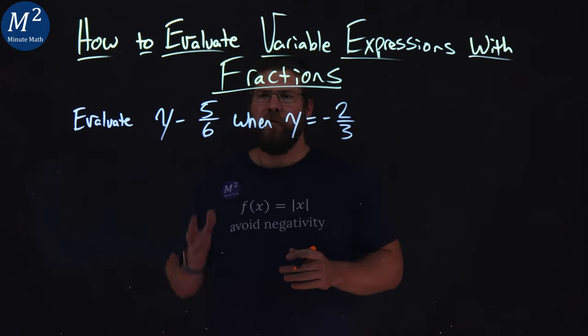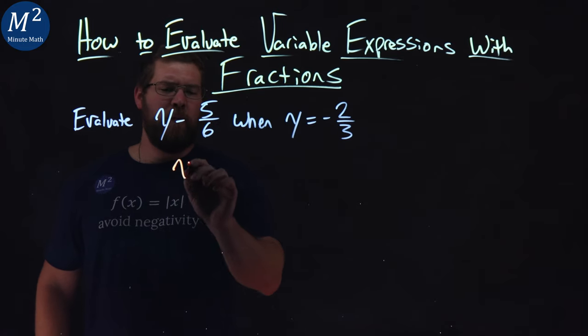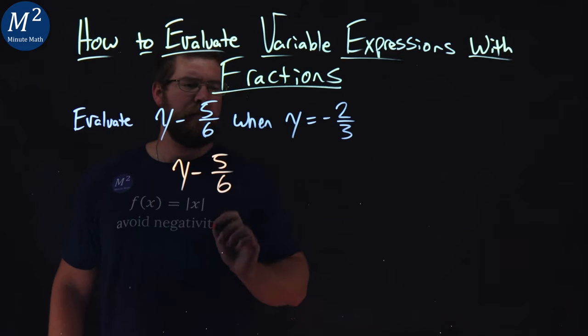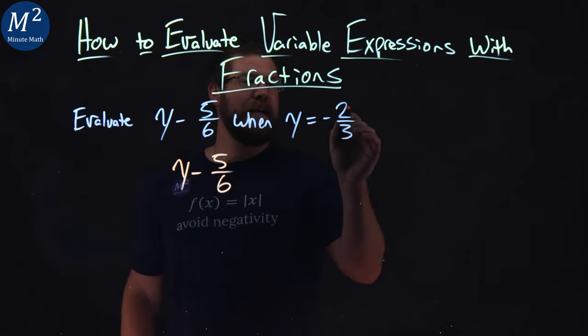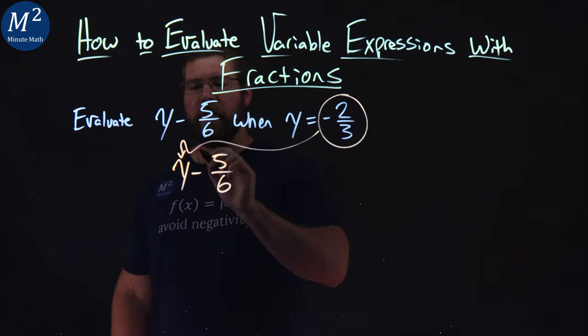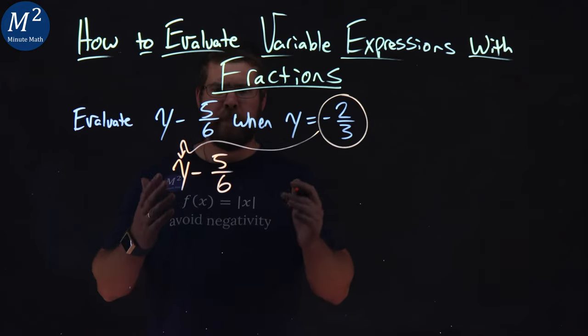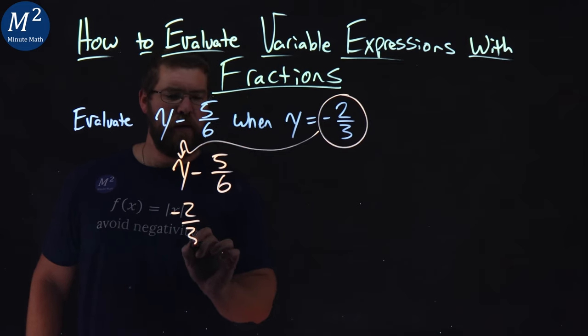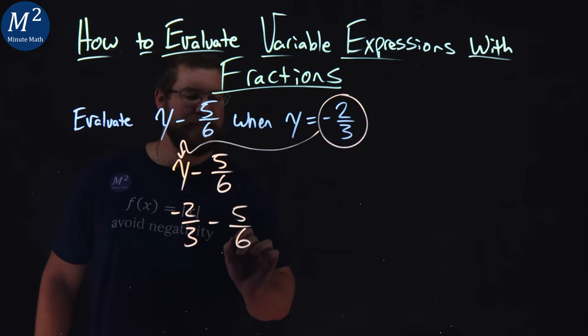First step here is I'm going to rewrite y minus 5 sixths, and we want to take this negative two-thirds and plug it in for y. So we have negative two-thirds minus 5 sixths.